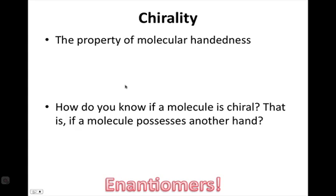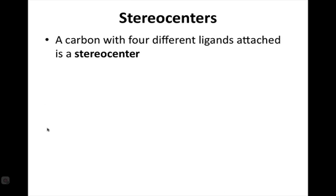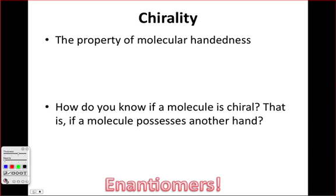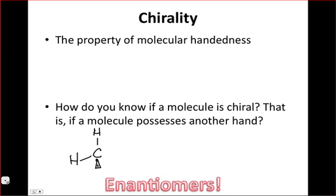So now I revisit this question: How do you know if a molecule is chiral? How do you know if a molecule possesses another hand that is not the same as the original starting molecule? And if you want to convince yourself that this is a problem worth studying, consider a simple molecule like methane. We take methane and draw it in its really three-dimensional form, in its proper geometry.